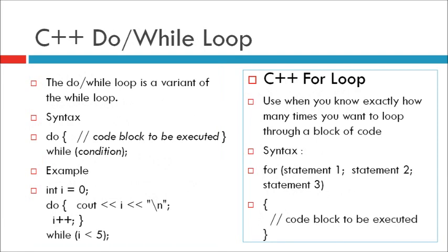C++ Do-While Loop. The do-while loop is a variant of the while loop. This loop will execute the code block once before checking if the condition is true, then it will repeat the loop as long as the condition is true.